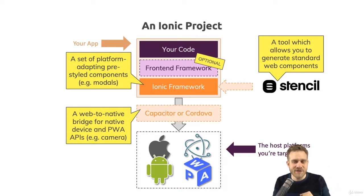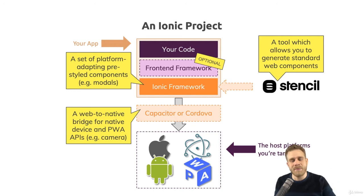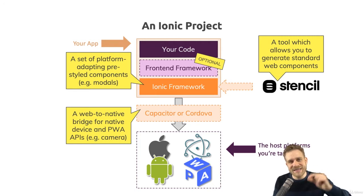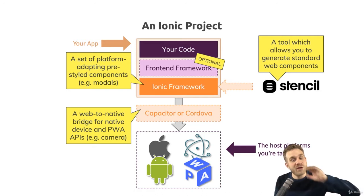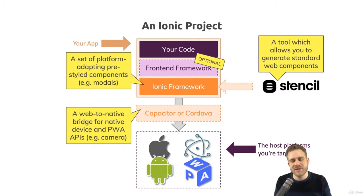From our JavaScript code, we can trigger certain functions which then trigger real native code on your device — to, for example, open the camera, get the user's location, show an alert, or anything like that. This can be done with real native code executed on your behalf without you needing to write it, by tools like Capacitor or Cordova, which you can even use together to some extent, though we'll primarily use Capacitor here.